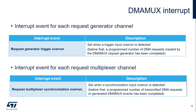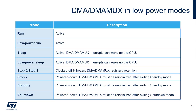Each DMA-MUX request generator channel can notify software of a trigger overrun. Each DMA request multiplexer channel can notify software of a synchronization overrun. This table indicates the state of the DMA controller and DMA-MUX according to the power mode. In sleep and low-power sleep modes, the DMA controller and the DMA-MUX remain active and can be used, for example, to transfer UART or I2C received characters to memory and afterwards to wake up the CPU.